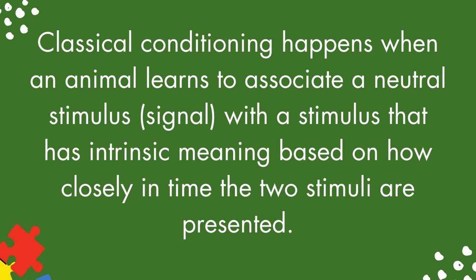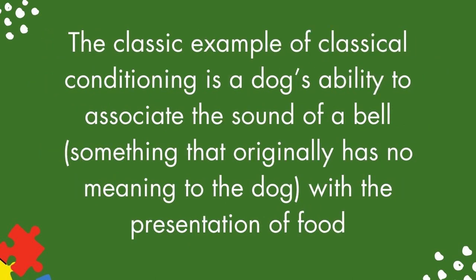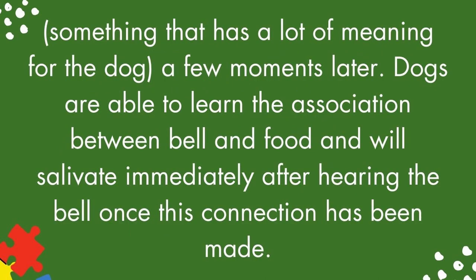Classical conditioning happens when an animal learns to associate a neutral stimulus, or signal, with a stimulus that has intrinsic meaning, based on how closely in time the two stimuli are presented. The classic example is a dog's ability to associate the sound of a bell — something that originally has no meaning to the dog — with the presentation of food, something that has a lot of meaning for the dog, a few moments later. Dogs will salivate immediately after hearing the bell once this connection has been made.